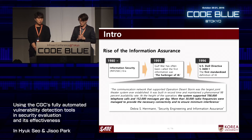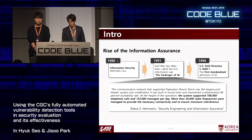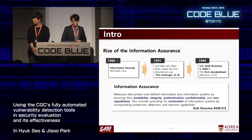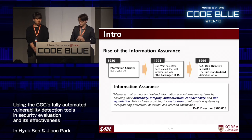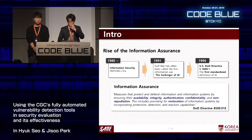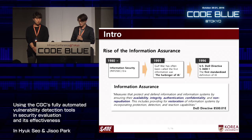After that, in 1996, the U.S. Department of Defense defined the first standardized definition for information assurance in DOD Directive 5-3600.1, now known as DOD Directive 8500.01E. The definition includes security properties such as availability, integrity, authentication, confidentiality, non-repudiation, and restoration.